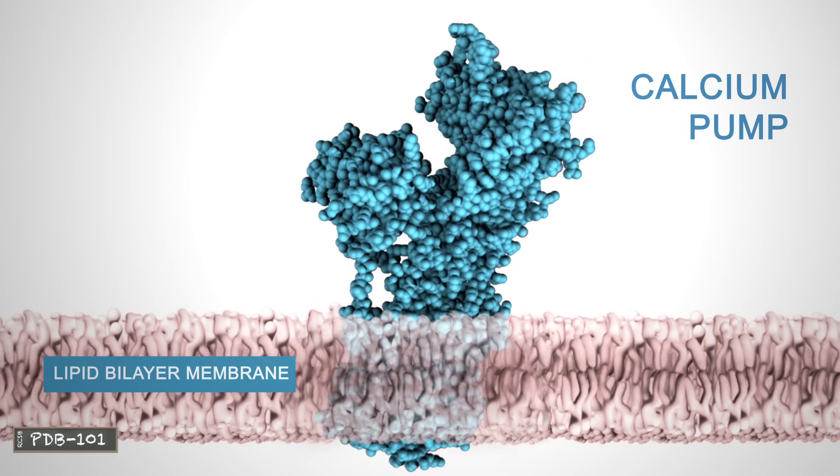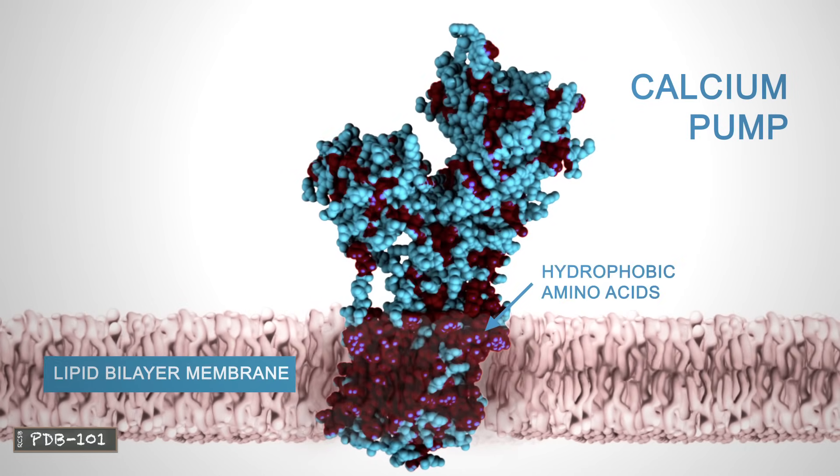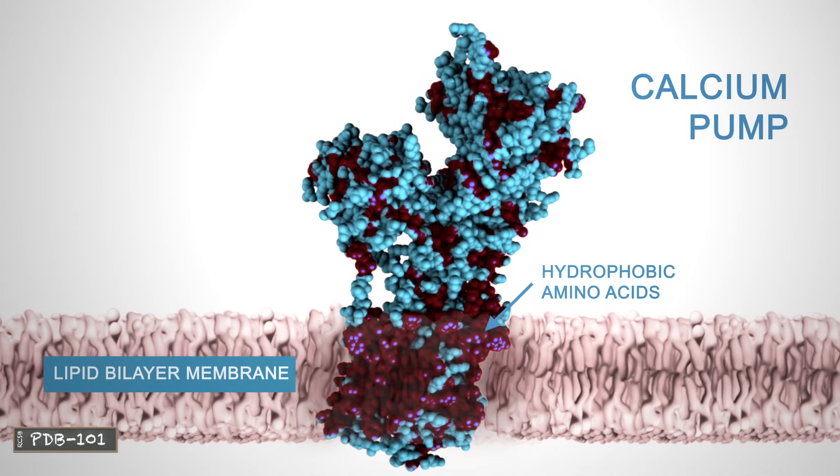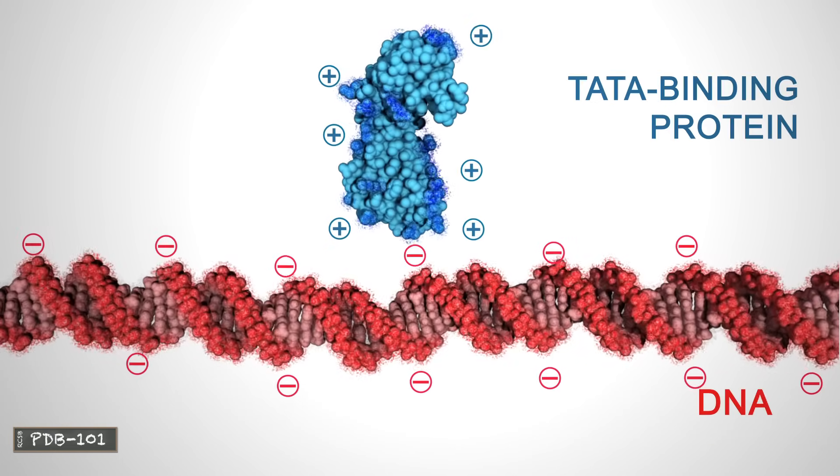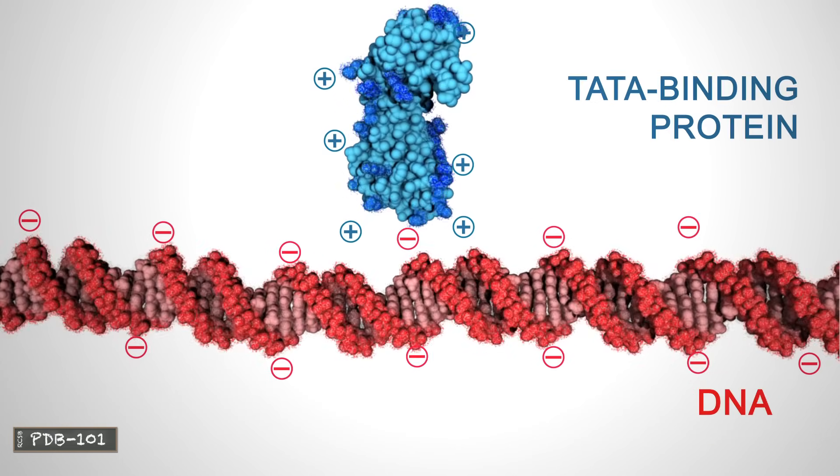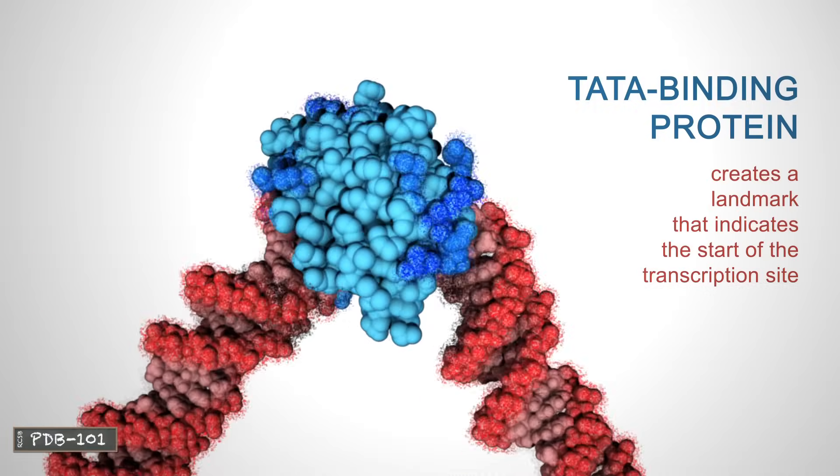Membrane-bound proteins have hydrophobic amino acids clustered together on their exteriors, so that hydrophobic side chains can interact with the lipids in the membrane. Charged amino acids allow proteins to interact with molecules that have complementary charges.